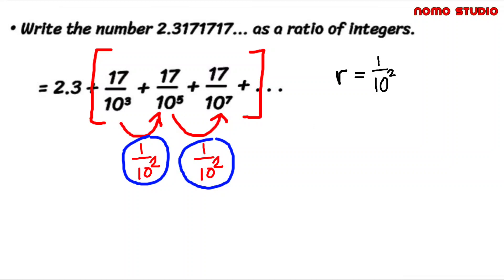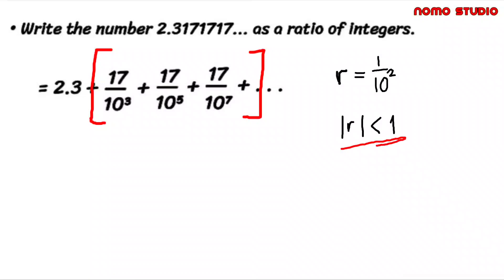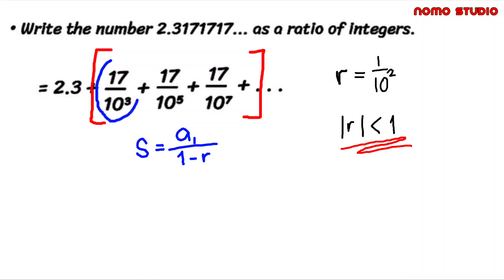Now, it turns out that if the absolute value of R is less than 1, then there's a special formula we can use to condense this portion of numbers. The formula for an infinite geometric series, where the absolute value of R is less than 1, is: S equals A sub 1 over 1 minus R. Here, A sub 1 is the first term of our geometric sequence, which is 17 over 10 cubed, and R is 1 over 10 squared.